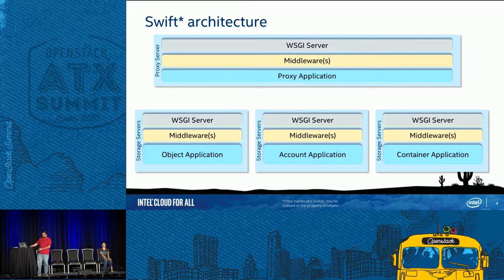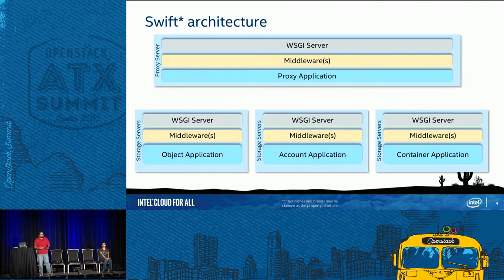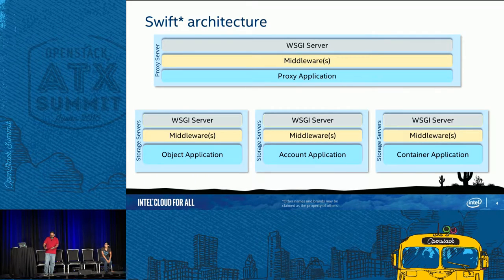Let's talk a bit about the Swift architecture. It is basically a two-tier architecture. There is a proxy tier that handles concurrent requests, and there is a storage tier which takes care of your objects, accounts, and containers. Accounts can have multiple containers, and a container can have multiple objects. If you have an application with very high concurrent reads and writes, you can just keep adding more proxy servers into the load balancer. If you need high storage and fewer writes, you can multiply the container servers, account servers, or object servers — adding only the servers you need.